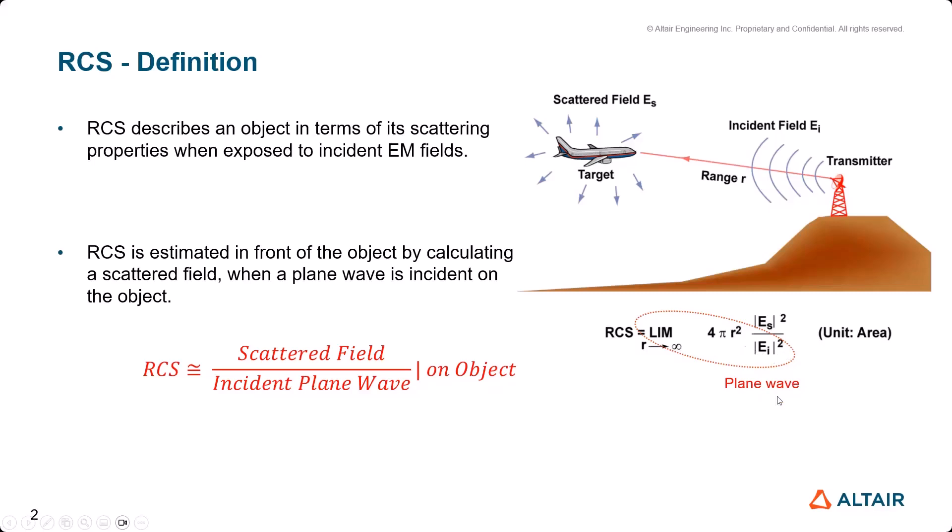EI² becomes plane wave on the object. So RCS is estimated in front of the object by calculating a scattered field when a plane wave is incident on the object. RCS is given by this equation: scattered field of incident plane wave on the object.